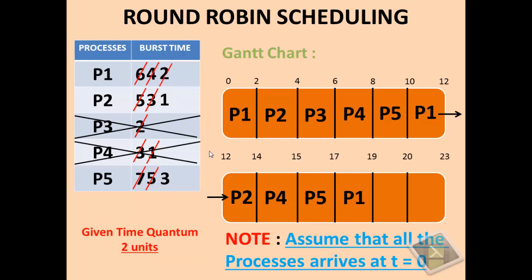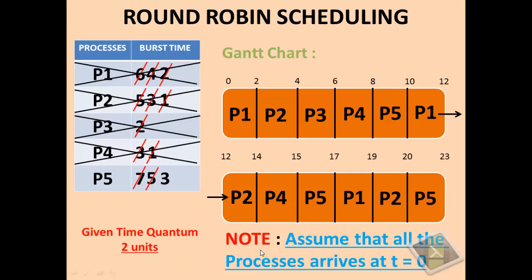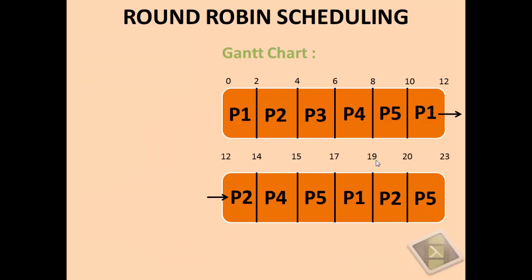Next is P1 with 2 units remaining; it executes for 2 units and is removed from the ready queue. Next is P2 with 1 unit remaining; it executes from time 19 to 20 and is removed from the ready queue. We are left with P5 with 3 units. Since the time quantum is 2, it executes from time 20 to 22 and is left with 1 unit. As there are no other processes in the ready queue, P5 executes its final 1 unit, and all processes have been removed from the ready queue.